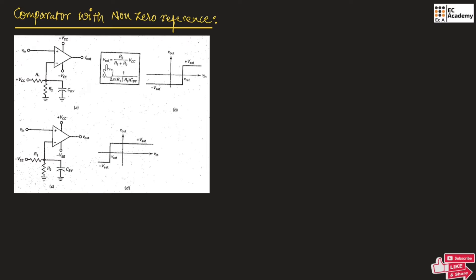For this circuit, we can take the reference voltage as R2 divided by R1 plus R2, multiplied by VCC. By applying a voltage divider across the inverting terminal of the op-amp, the input is considered at the non-inverting terminal. Whenever the input voltage is less than the reference voltage, the output will be minus V saturation. When the input voltage is greater than the reference voltage, the output will be plus V saturation.